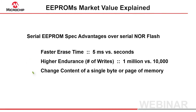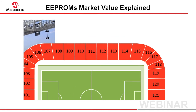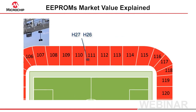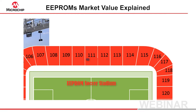Here is probably the key one: changing the content of just one byte or one page of an IC without impacting any other cell. Let's use an example. Imagine attending a World Cup soccer match and everyone is already in their seat. However, these two guys in section 111, row H, seats 26 and 27, are switched — they're sitting in the wrong seats. The referee demands that these two guys change places before he will let the game start. Now, if this is a NOR Flash stadium, everyone in section 111 would have to leave the stadium, change the order of these two guys outside the stadium, and then everyone would file back in, but now with seats 26 and 27 in the right order. But if this is a serial EEPROM stadium, the guys in seats 26 and 27 just change seats without anyone else moving.